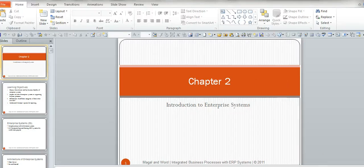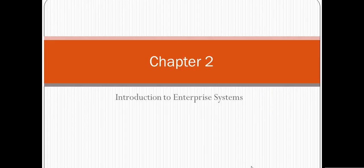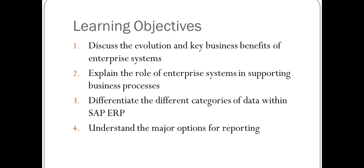This is Chapter 2 from your textbook, Introduction to Enterprise Systems. Although this is Chapter 2, it is part of your Week 1 reading because it gives you an insight into what enterprise systems are and what SAP is. The learning objectives cover the benefits of enterprise systems, the role enterprise systems support, the different categories of data within SAP ERP, which is the most popular enterprise system in the world.